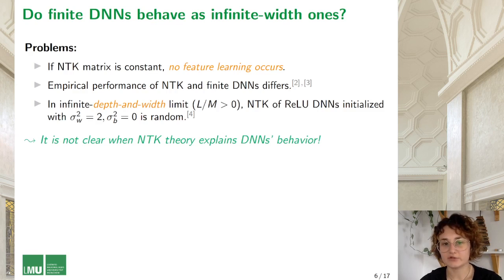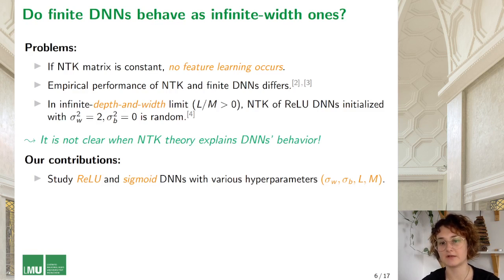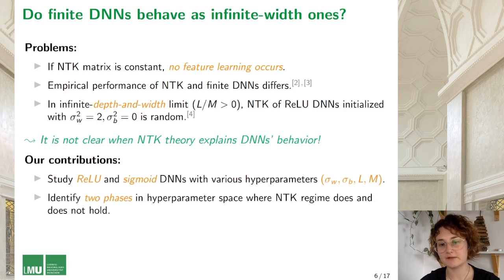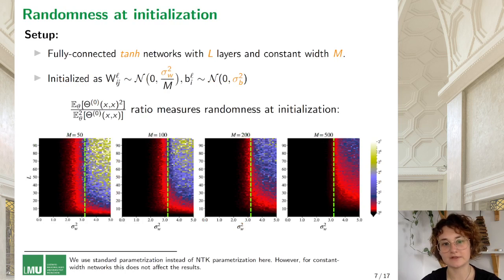We address this question in our work. We study ReLU and sigmoid networks with different hyperparameters, focusing specifically on the initialization hyperparameters and network depth and width. As a result, we identified two phases in the hyperparameter space where the NTK regime does and doesn't hold. We also study variance of the output function of deep neural networks in the NTK regime and discuss what it tells us about generalization.